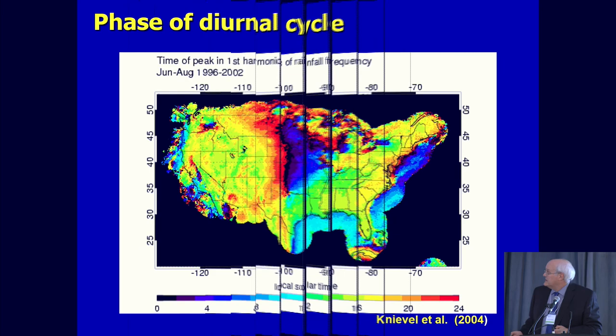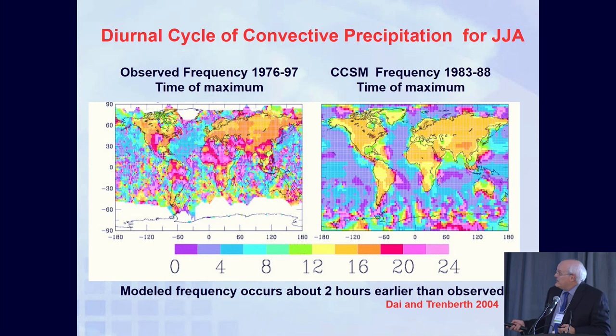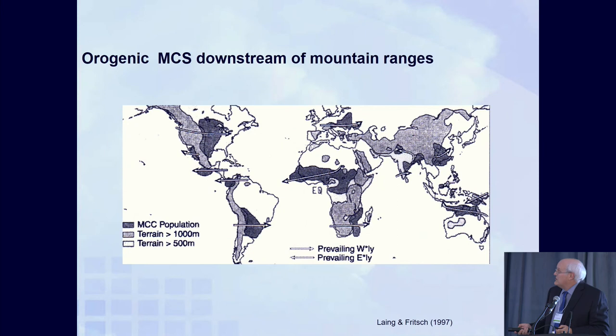This same phenomenon happens globally. The observations show the midnight maximum, and this is an old climate model run from NCAR — you don't see any hint of a midnight max over the continental US. Again, convective parameterizations are not doing the right thing.